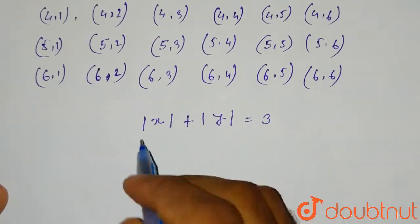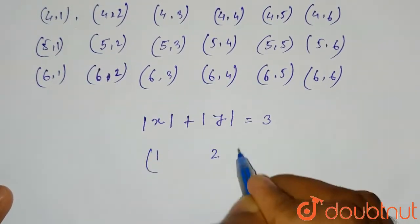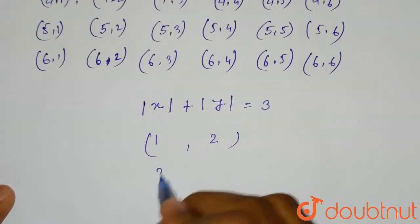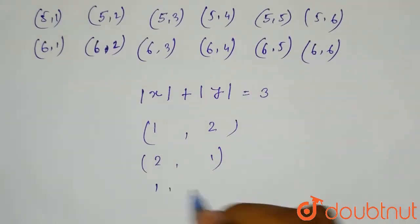So this equation will only take three cases: if we take x as 1, y will be equal to 2, so (1,2). If we take x as 2, y will be equal to 1, so (2,1). And we can take (1,1).